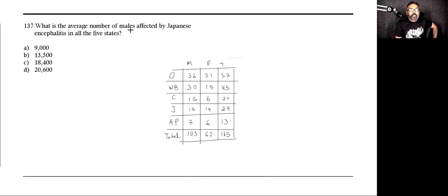What is the average number of males affected by Japanese encephalitis across all 5 states? We are looking at 103 divided by 5, which will be very close to 20.6. So this will be approximately 20. Done.